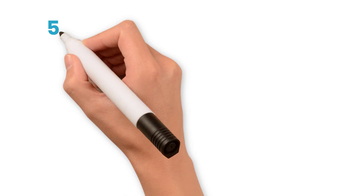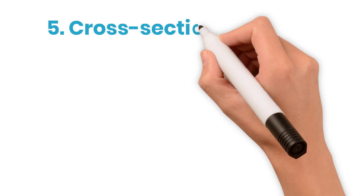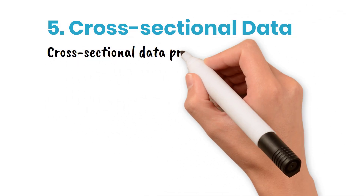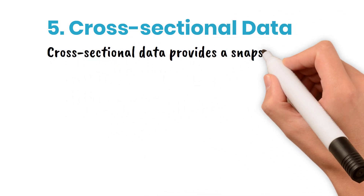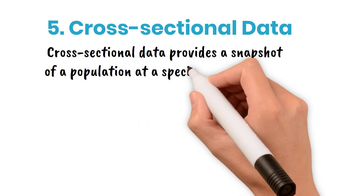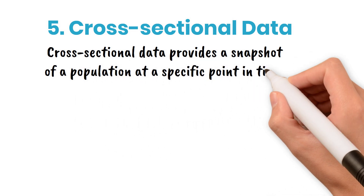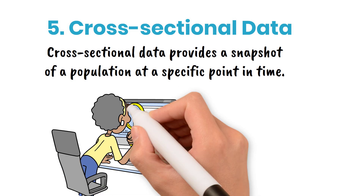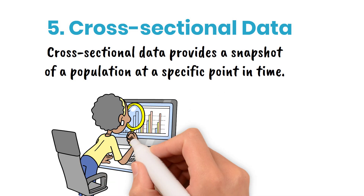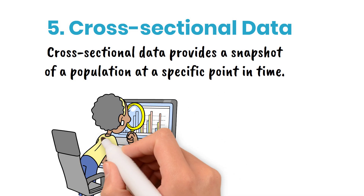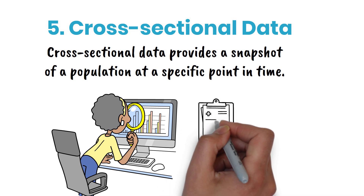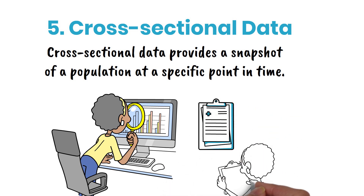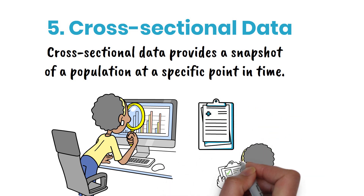Number five: cross-sectional data. Cross-sectional data provides a snapshot of a population at a specific point in time. It's useful for understanding the current state of social phenomena, but doesn't capture changes over time. For example, a public health researcher might conduct a survey on smoking habits among adults in a city, collecting data on age, gender, education, and smoking frequency.